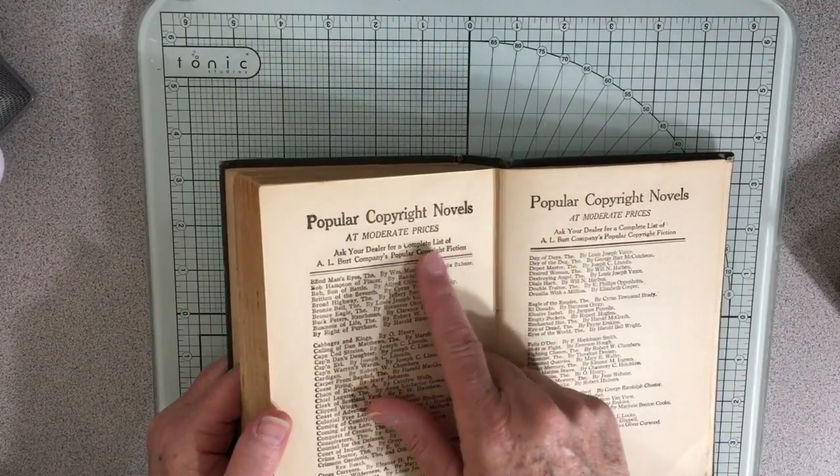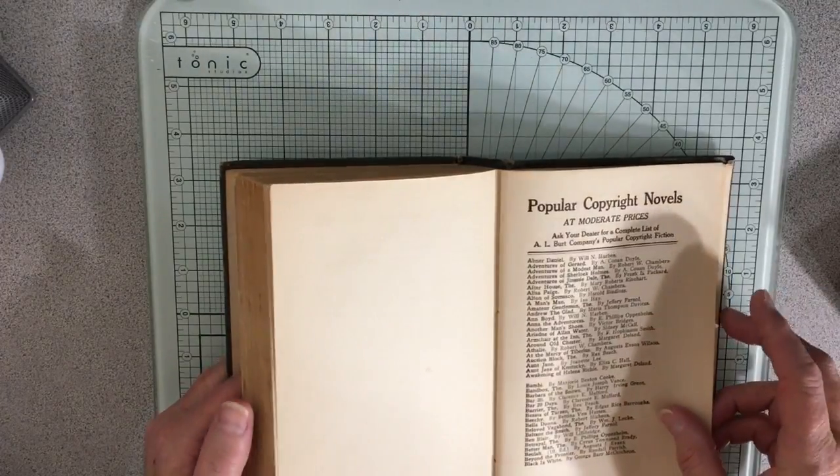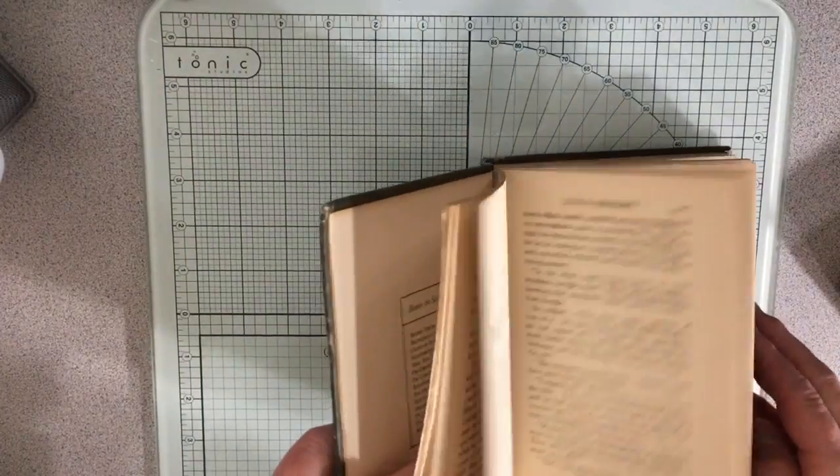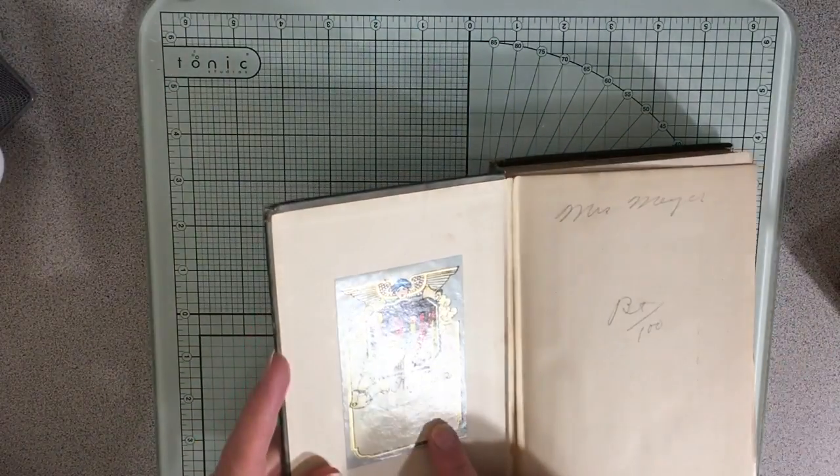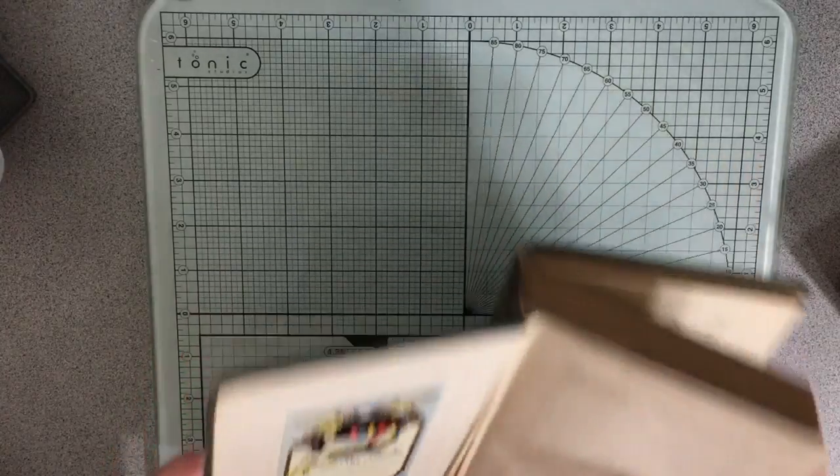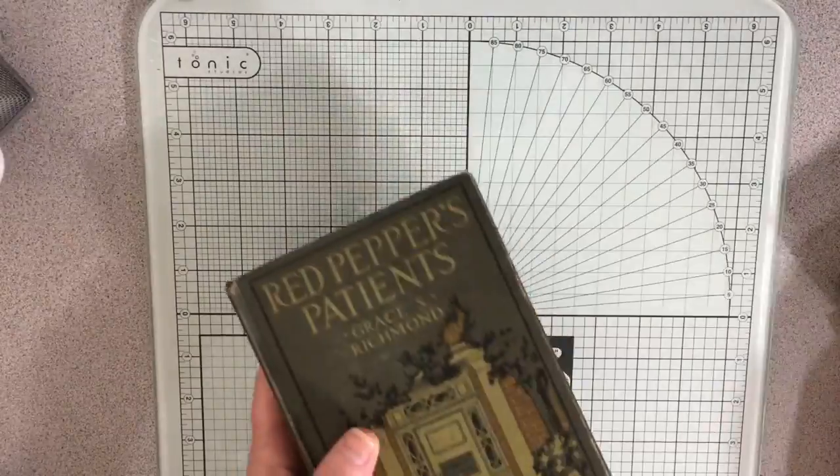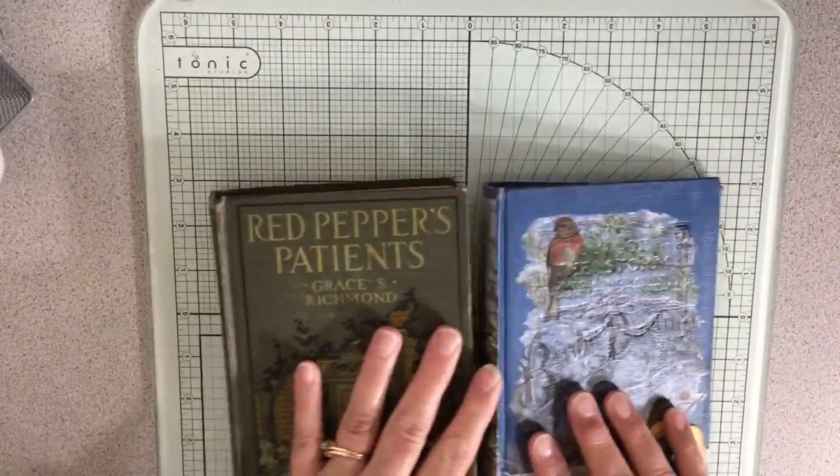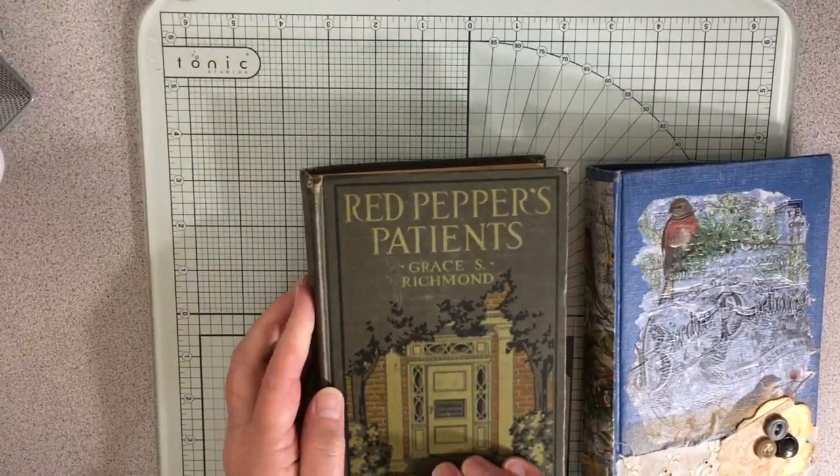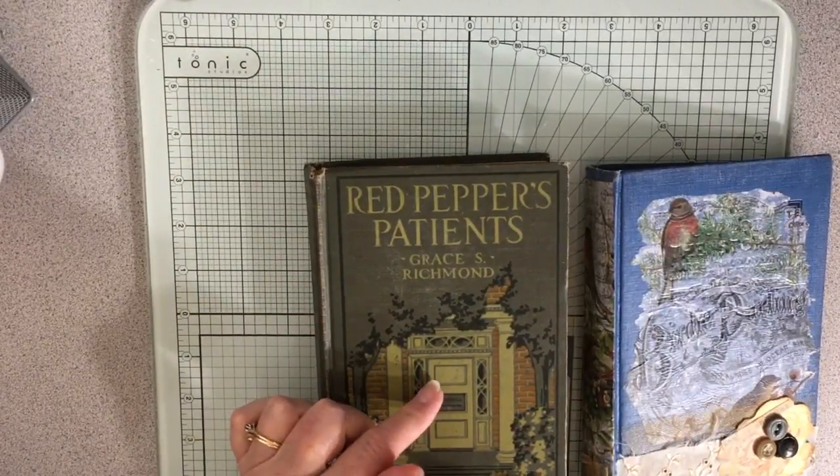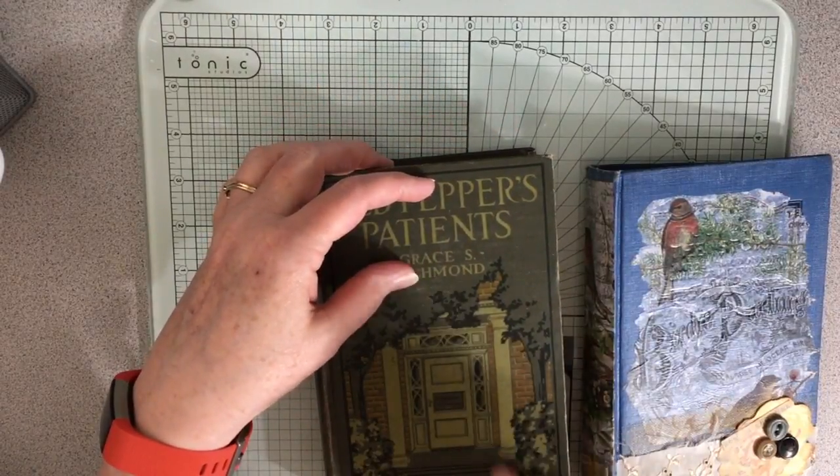Look at this. Popular copyright novels at moderate prices. This is great. And there is one picture in here. But anyway, look at this book plate. So I'll be taking this apart, which will be super easy. And then I can have this one for myself. And then I'm going to sell this one when it's ready.